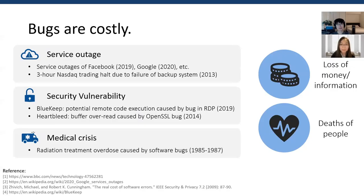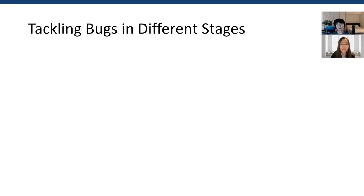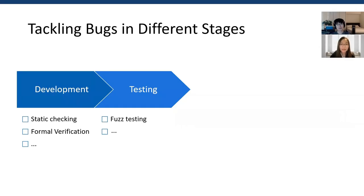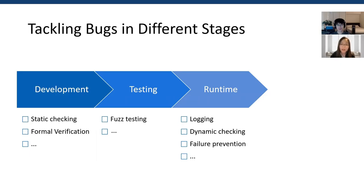Software correctness is a long-studied problem. Researchers have designed a wide spectrum of techniques to detect and fix bugs in different stages of software development and deployment. In the development phase, formal verification and static checking are two typical approaches to detect bugs and offer some level of correctness guarantees. Then software goes to the next step: testing with a set of designed software inputs. There are many techniques about how to generate test inputs. Fuzzing is the main technique covered by the papers in this session. Testing cannot guarantee to expose all bugs. During runtime, logging, dynamic checking, and failure prevention techniques are used to detect, diagnose, and handle bugs.